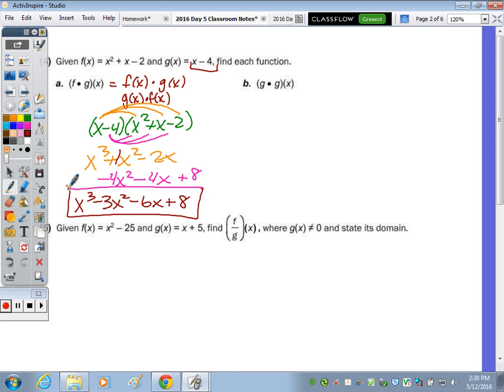And then in part B, it's just G of X times itself. So you could write this as G of X times G of X. Or G of X squared. So X minus 4 times X minus 4. This is a special trinomial. It's a perfect squared trinomial. So the middle should be the double. The last term should be the product of negative 4.